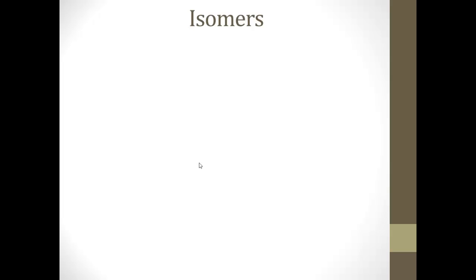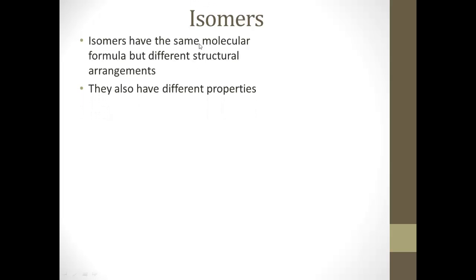Okay. Now, you can also have what's called isomers. And an isomer is something where they have the same molecular formula, but different structural arrangements. And when we're dealing with organic molecules, it becomes really, really important. Because they'll have different properties.